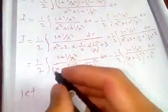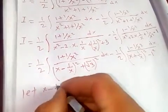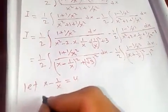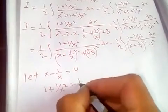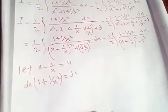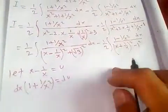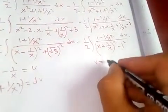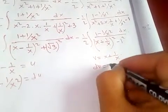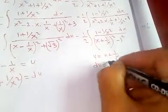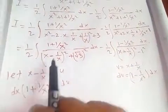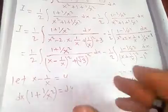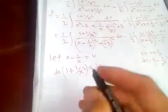For the first integral, let u equal x minus 1 over x. Taking the derivative, du equals (1 plus 1 over x squared) dx. For the second integral, let v equal x plus 1 over x, so dv equals (1 minus 1 over x squared) dx. This is exactly the numerator in each case, which is why we need this simplification.